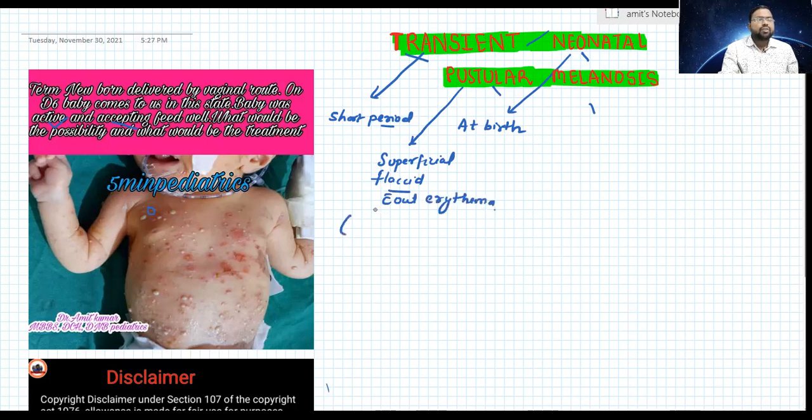And if we look, it is without erythema. If we go for scraping and go for peripheral smear, it shows neutrophils in scraping. It is for a short period, that is transient, and usually resolved in two to three days. It's a self-limiting condition.